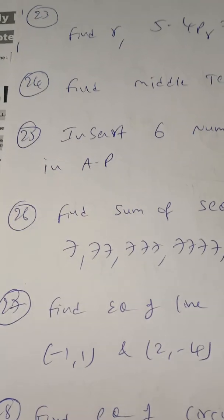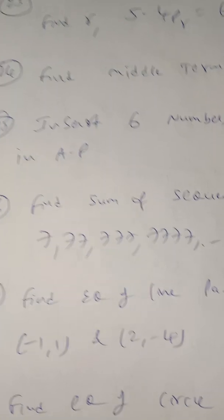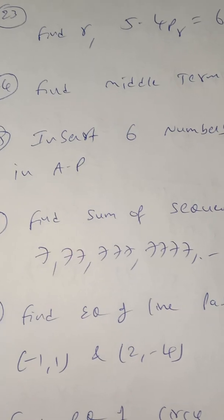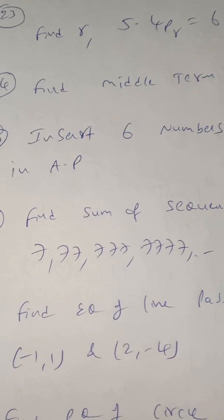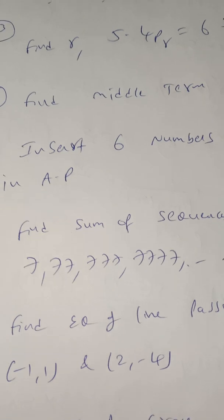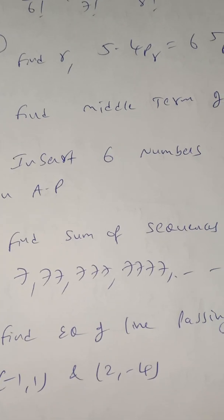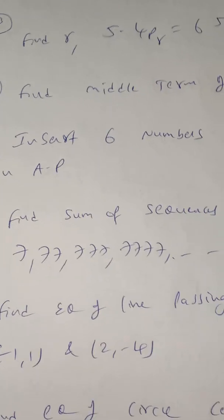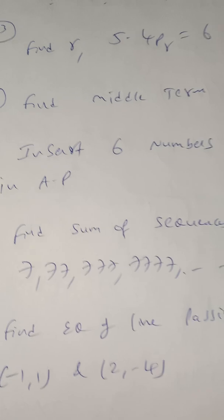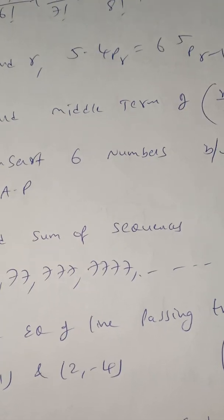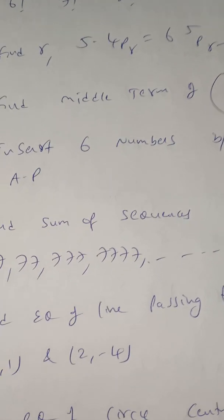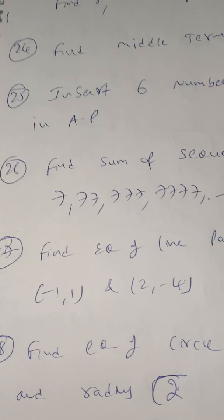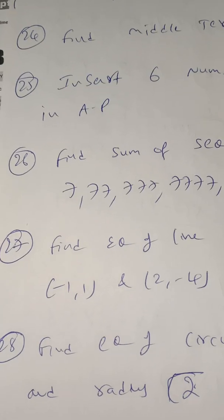Another important question: find the equation of the line passing through the points (−1, 1) and (2, −4). Use the formula y − y₁ = [(y₂ − y₁)/(x₂ − x₁)] × (x − x₁). Or they may ask using point-slope form y − y₁ = m(x − x₁), or intercept form. One of these three question types will appear in straight lines.